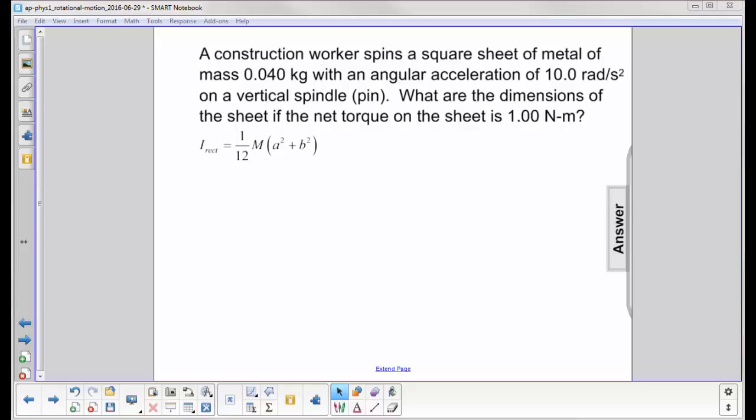A construction worker spins a square sheet of metal of mass 0.040 kilograms with an angular acceleration of 10 radians per second squared on a vertical spindle pin. What are the dimensions of the sheet if the net torque on the sheet is 1.00 Newton-meters?